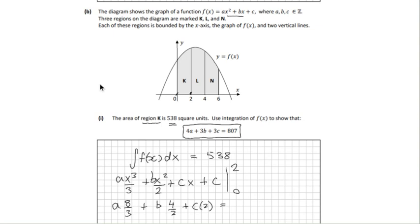All we need to do now is multiply everything by 6, and we will eliminate the fraction. Let's work that out. Multiply by 6 here, so we get 16a plus 12b plus 12c equals 3228.